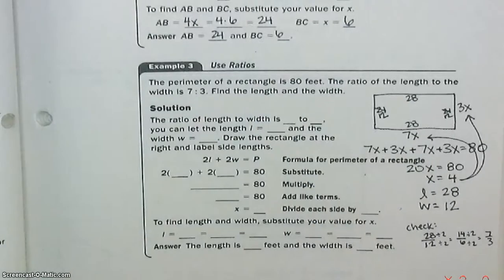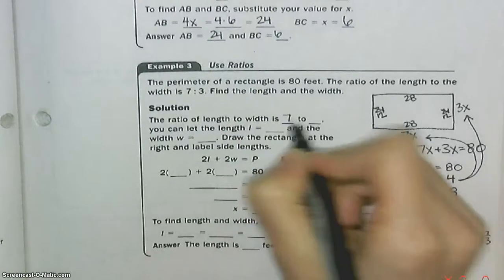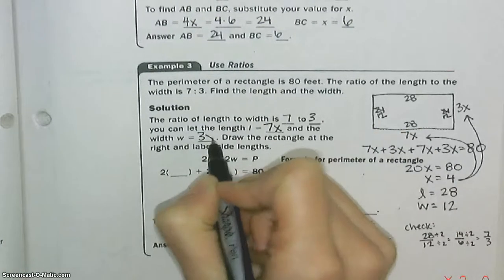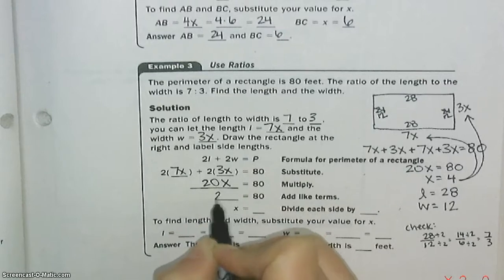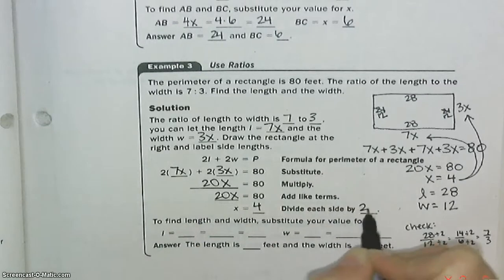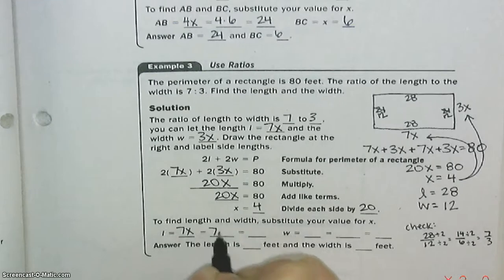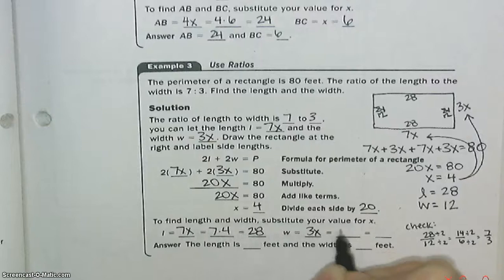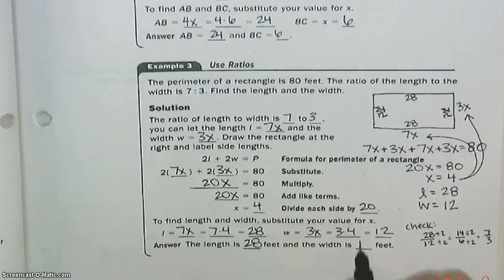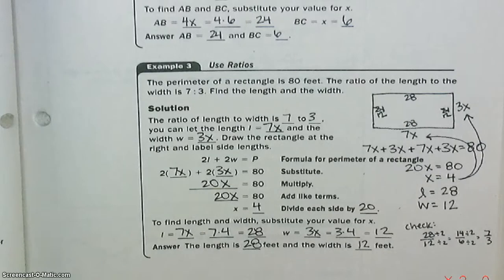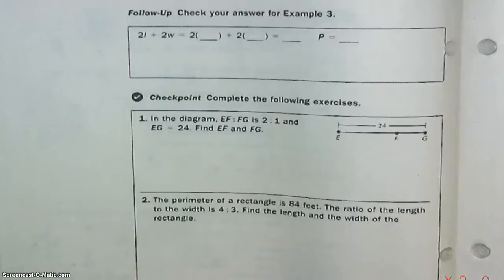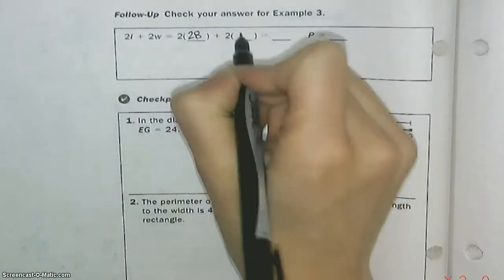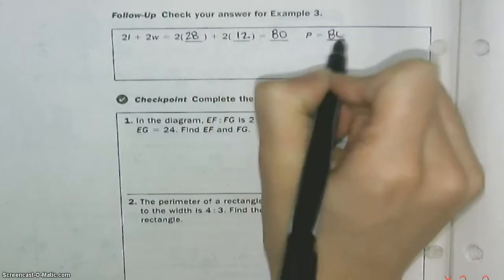So we know the ratio is 7 to 3. We got the length 7x, the width 3x. To go all the way around, that was 20x, which left us with 4. So we plugged everything in. The length was 7x, so we did 7 times 4 is 28. The width was 3x, so we did 3 times 4 is 12. And our final answers were 28 and 12. We did 2 times 28 and 2 times 12, and that makes 80, which is perfect. That's what we wanted the perimeter to be.